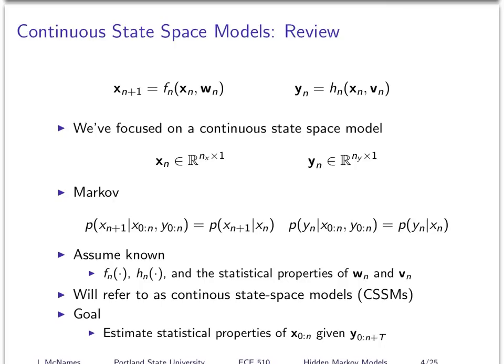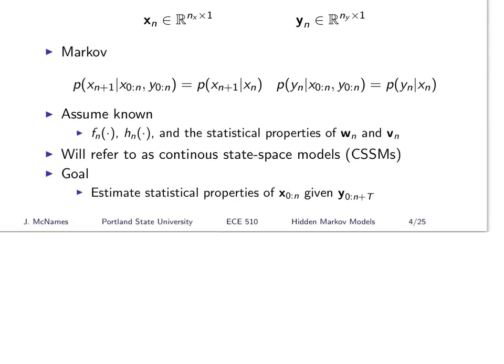One of the standing assumptions for the continuous state space models we've been working with all term is that they're Markov. Mathematically, the probability of the state at time n+1, given all previous and current observations and all previous and current state values, is just equal to the probability of x of n+1 given the current state. This contains all the information from past states and measurements up to the current time step. Similarly, if you know the state at time n, adding previous states and measurements gives no additional information.